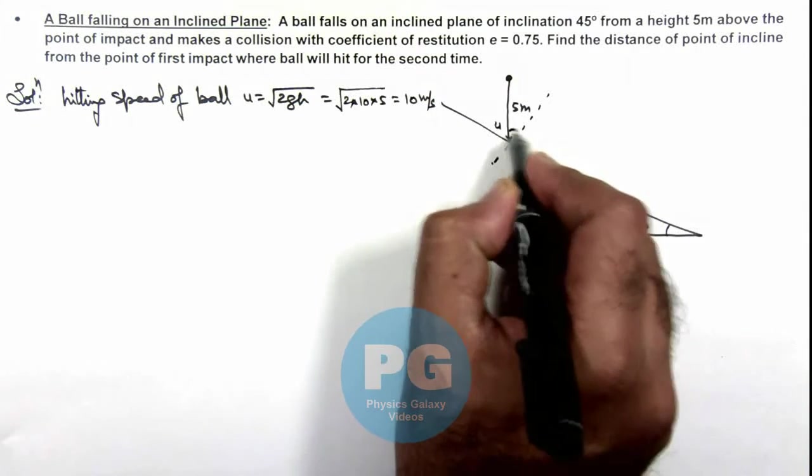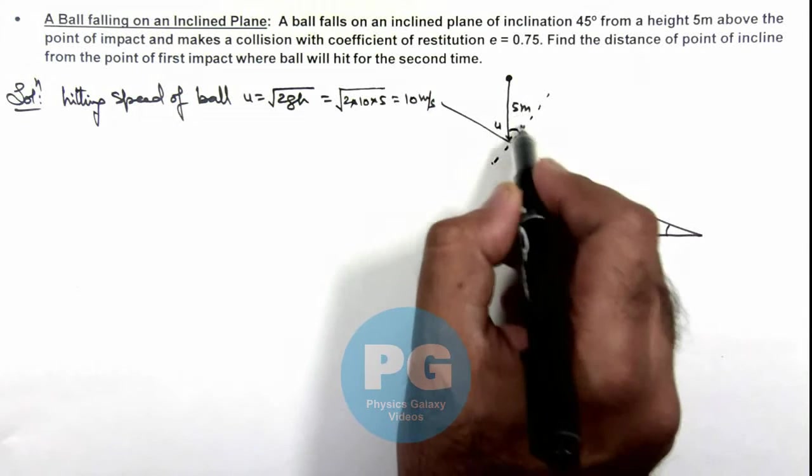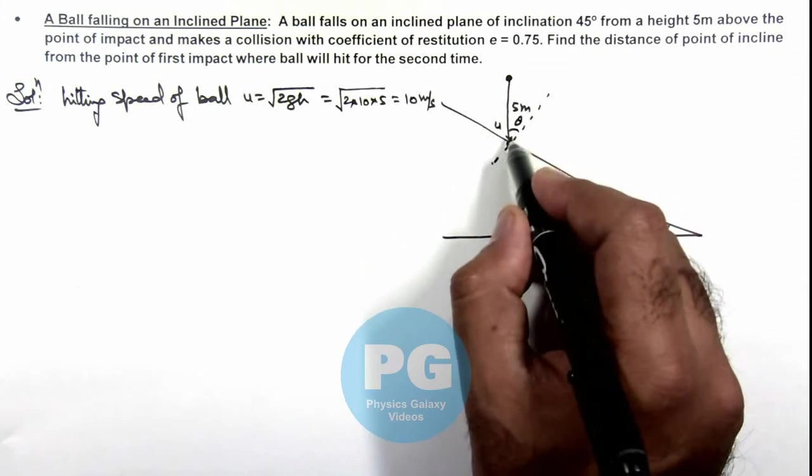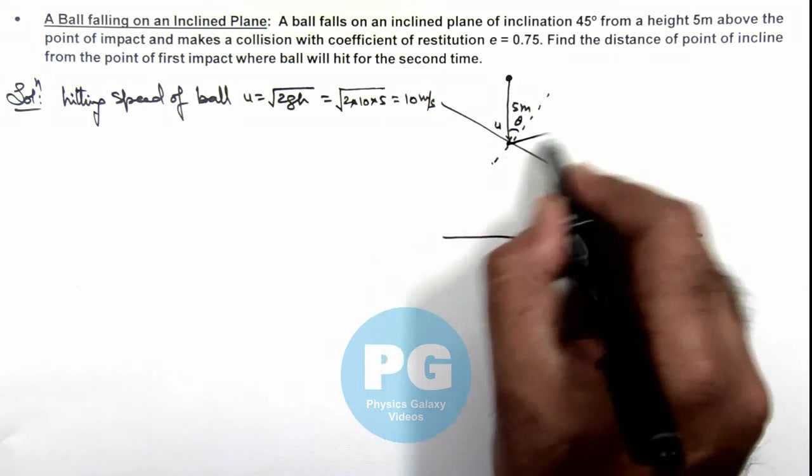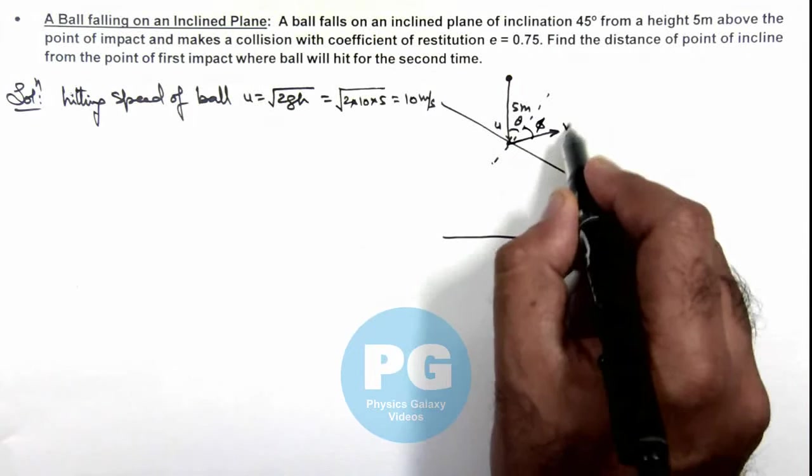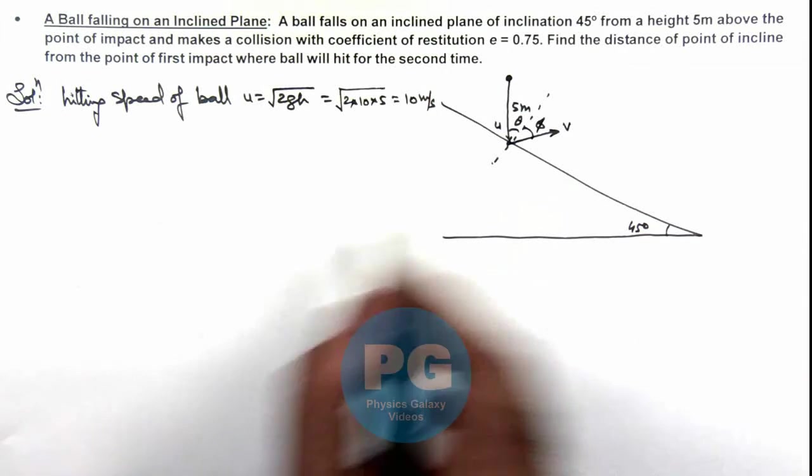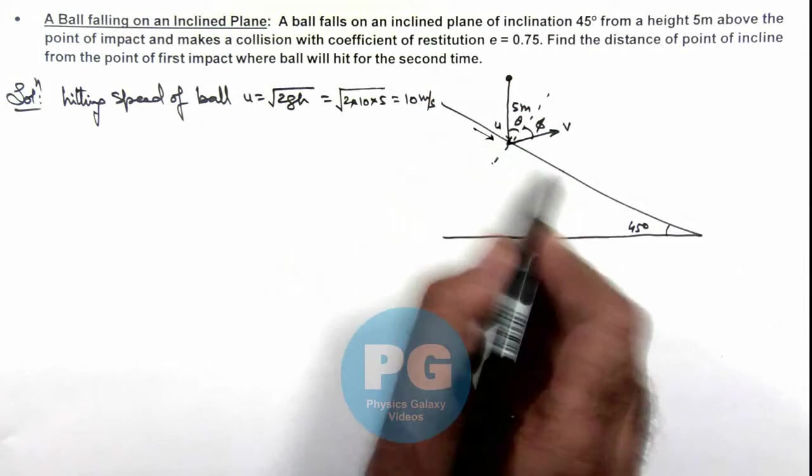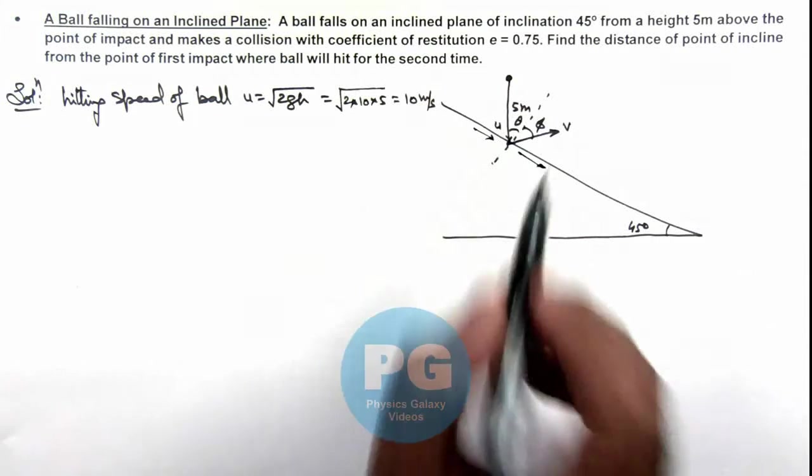With the normal, the angle at which it strikes is θ, but due to restitution between ball and inclined plane, it rebounds at an angle φ and at a speed v. As the incline is smooth, the component of velocity along the incline remains the same.